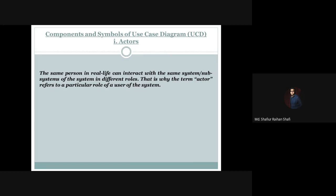One key observation about actors is that the same person or same thing in real life can interact with the same system or the subsystems of the system in different roles. That is why the term actor refers to a particular role of a user of the system, not to a specific person or object. The same person or thing can play different roles in different system perspectives.